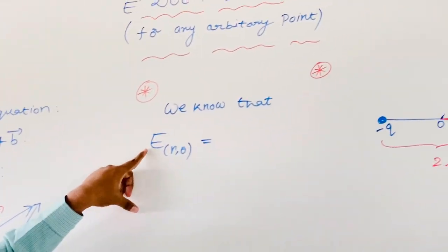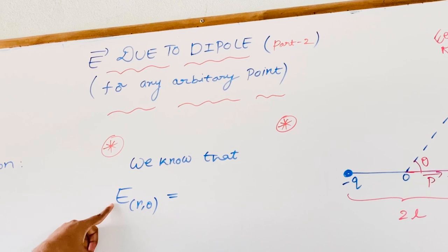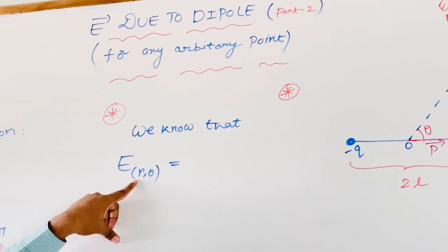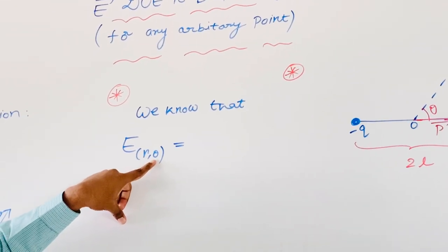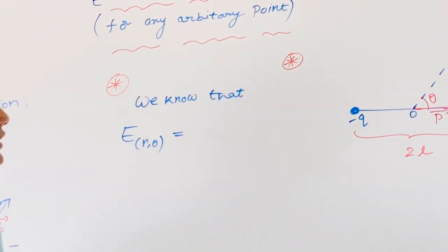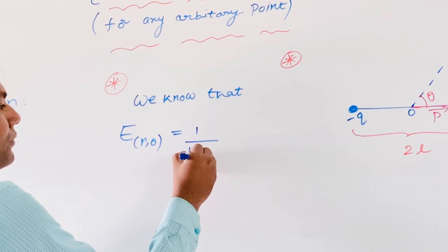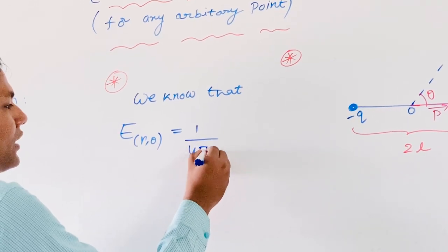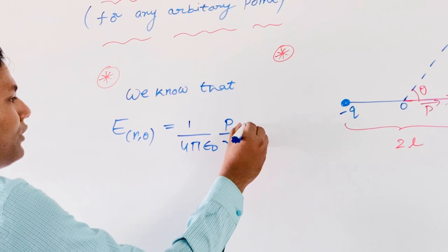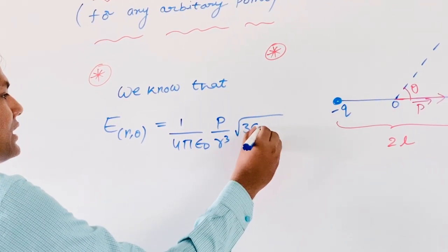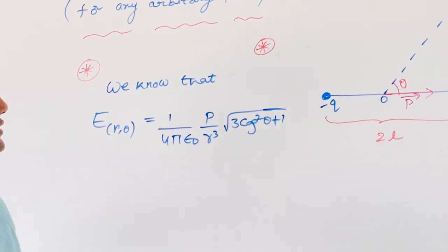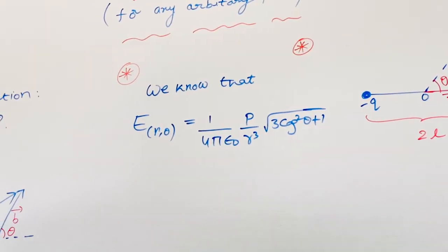In the previous session, we deduced the magnitude of E-bar at any distance R from the center of the dipole and at angle theta. The expression that we derived is: 1 by 4 pi epsilon naught into P by R cube, multiplied by the square root of 3 cos squared theta plus 1. If you want to know the proof, just go back to the previous video.